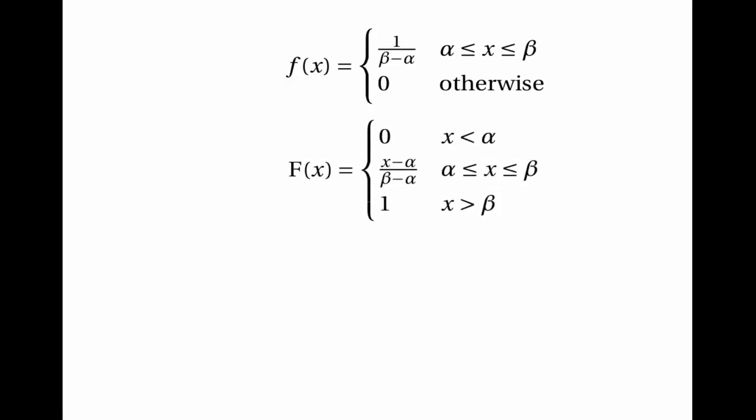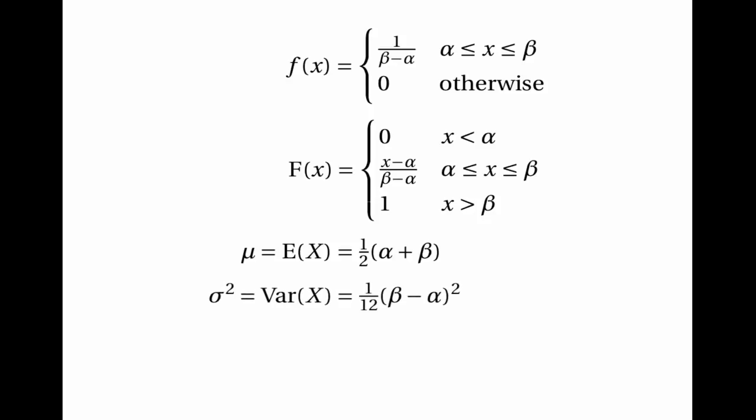That's almost the end of the video about the continuous uniform distribution. To summarise: the probability density function is 1 over beta minus alpha when x is between alpha and beta; the cumulative distribution function is 0 below alpha, x minus alpha over beta minus alpha between alpha and beta, and 1 above beta; the mean is a half of alpha plus beta; the variance is a twelfth of the square of beta minus alpha; the median equals the mean; and there is no mode. Thank you very much for listening.